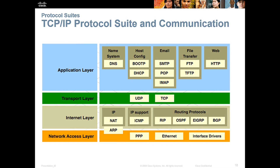Different layers have different protocols. ARP deals with the bottom two layers. IP operates at layer 3, the Internet layer. At the transport layer, we have TCP and UDP.